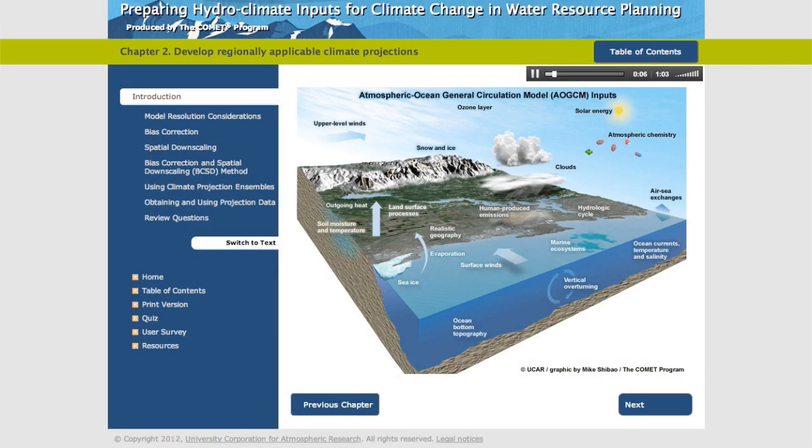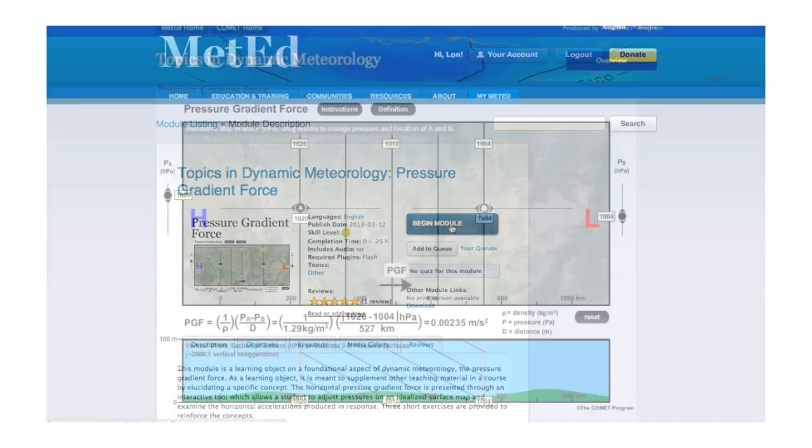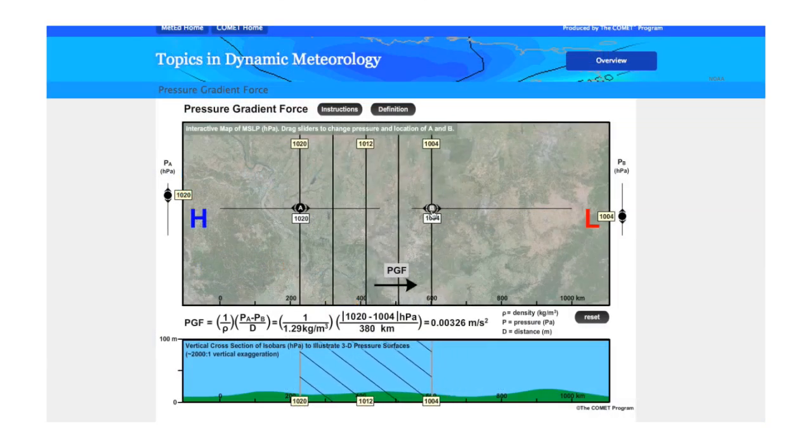In Section 1, we reviewed some of the basic concepts regarding atmosphere-ocean general circulation models. Comet lessons are very convenient. Students can access them anytime. All you have to do is register on the website. The graphics are crisp, lots of animations and movies built into the lessons.